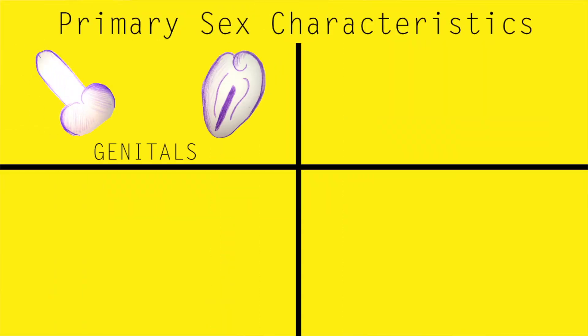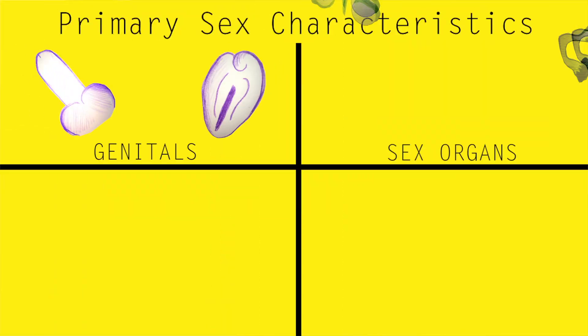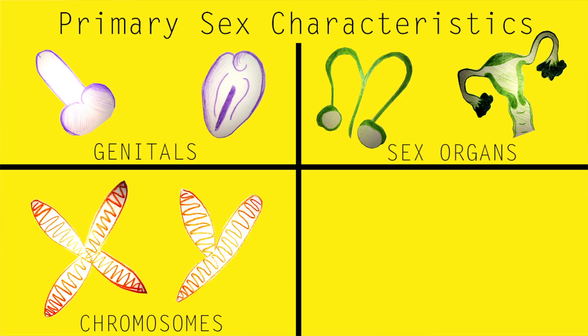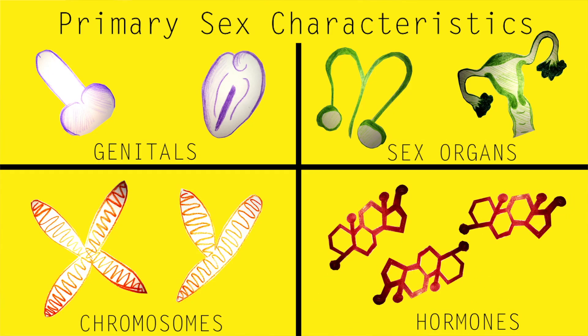Sex has four primary characteristics: your genitals on the outside, your sex organs on the inside, your chromosomes — part of your DNA — and your hormones, which are secreted by your glands into your blood. These primary sex characteristics are typically present when you're born, and they work together to produce your secondary sex characteristics.